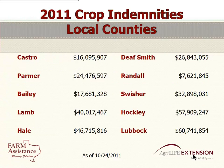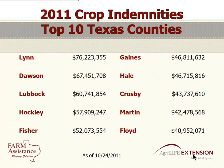As far as indemnities in this area: Castro County had $16 million paid out, Parmer $24 million, Bailey $17 million, Lamb $40 million, Hale $46 million, Deaf Smith $26 million. Big payouts around here, and $60 million in Lubbock. Looking at the top 10 Texas counties, Lynn County had the most at $76 million, Dawson at $67 million, then Lubbock, Hockley, Fisher — all top 10 were over $40 million paid out in each of those counties.